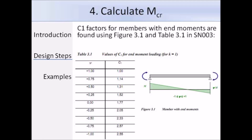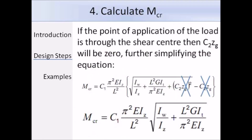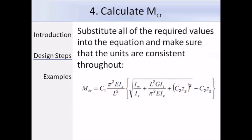There's another way the expression for M_CR can be simplified: when the point of load application is at the shear centre, Z_g equals 0 because the load is neither stabilizing nor destabilizing, and the C2·Z_g terms can be removed from the equation. Therefore, unless we have a destabilizing load, we can conservatively use this simplified expression by assuming Z_g equals 0. It's easy to make mistakes with units, so make sure all units are consistent — this is probably the most difficult step in working out the lateral torsional buckling resistance.